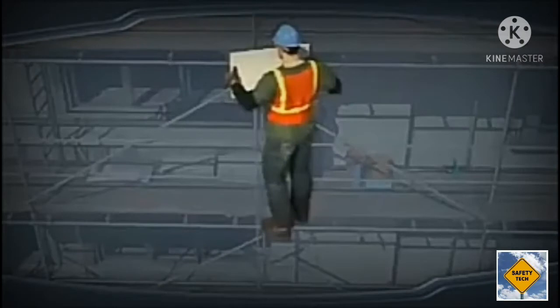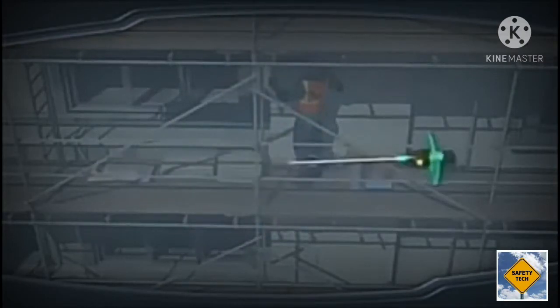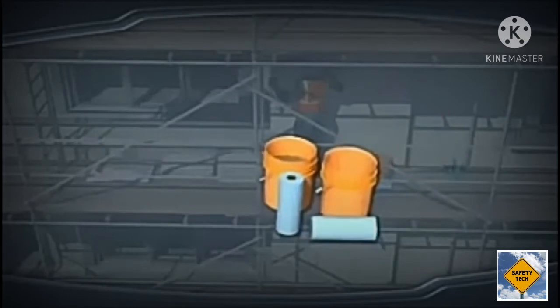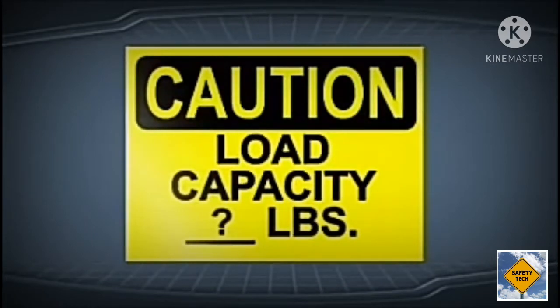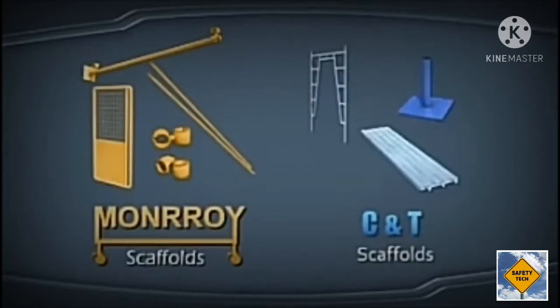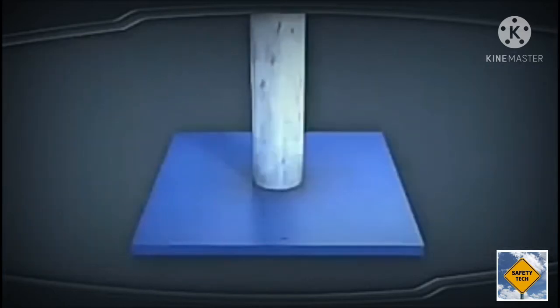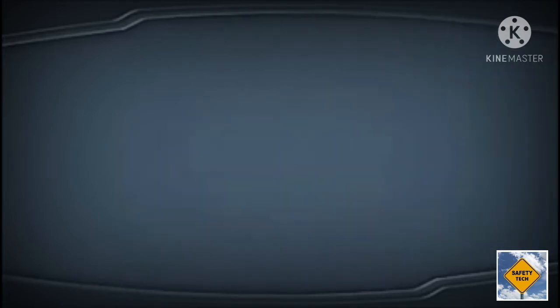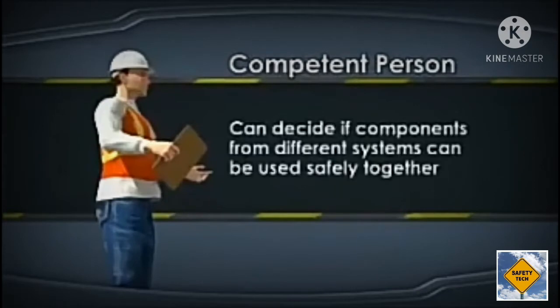The intended load includes people, materials, tools, and any additional components the scaffold will support. Most scaffolding components have a designated load capacity given by the manufacturer. For the most part, components from different scaffold systems should never be mixed and matched. This is especially true of components made of different metals because there can be a chemical reaction between the metals that weakens them. The competent person can decide if components from different systems can be used safely together.